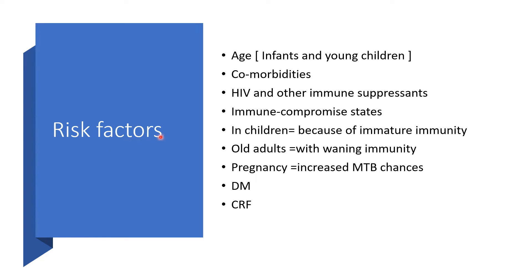The risk factors here will be all factors that could lead to immune suppression. When your immunity is strong, it's not likely that you will run into this. But when immunity is down, after having primary pulmonary tuberculosis, you may likely come down with Miliary Tuberculosis. So: age — infants and young children; comorbidities; HIV and other immune suppressants. Remember, anyone with HIV right now should be screened for Miliary Tuberculosis, and anyone with TB should be screened for HIV.